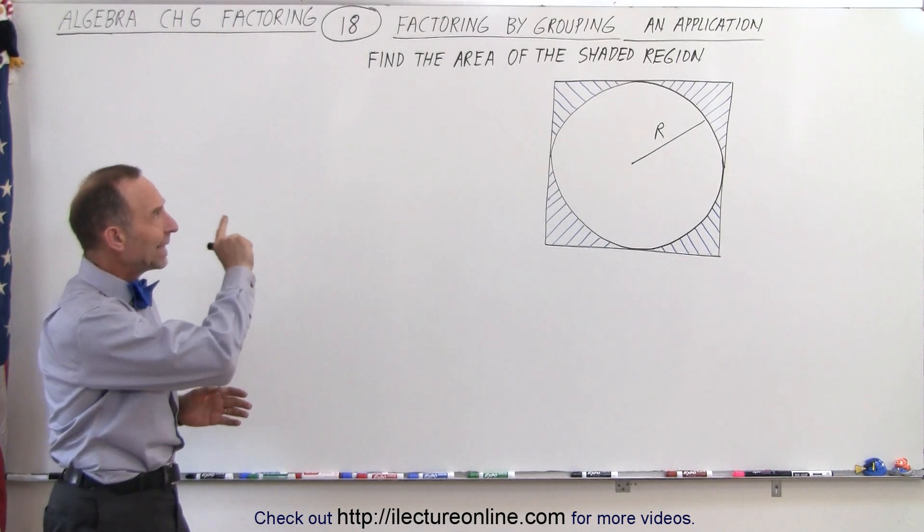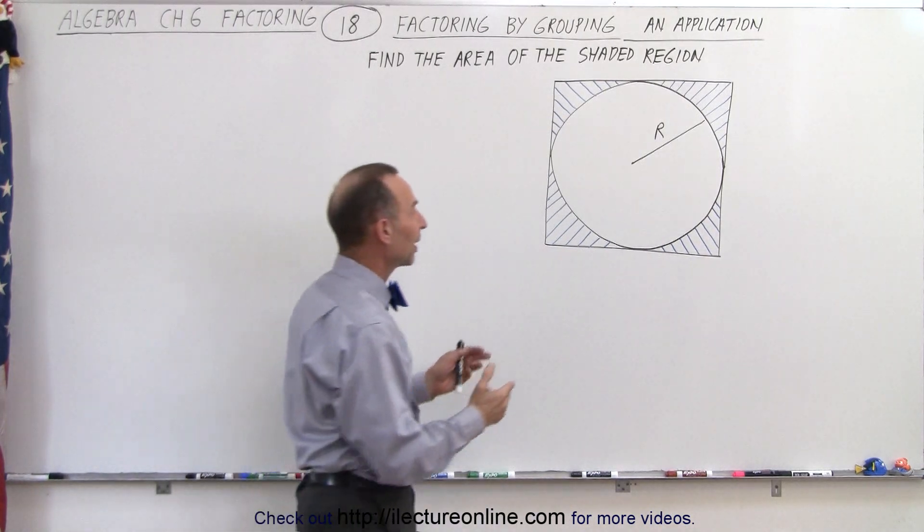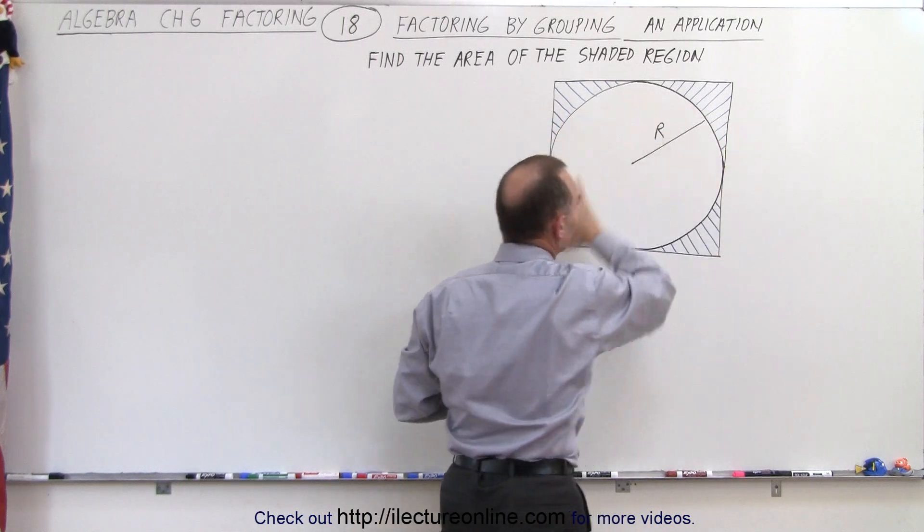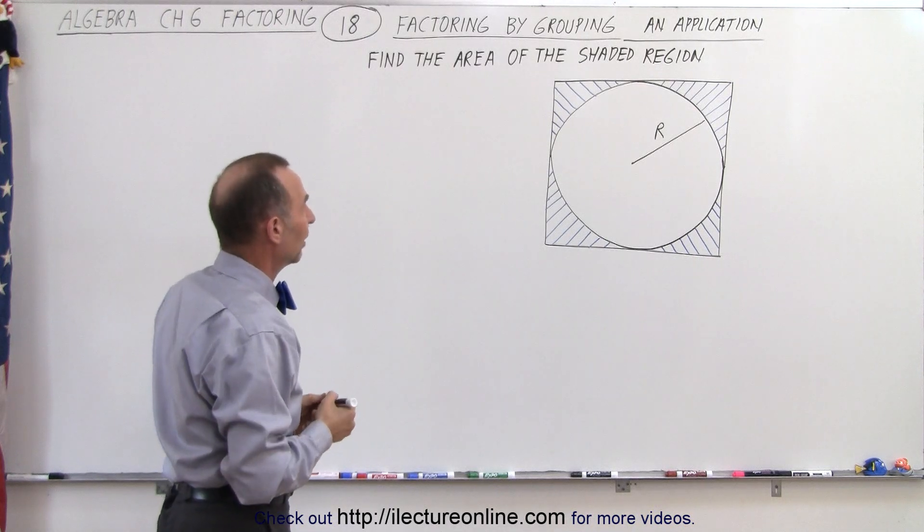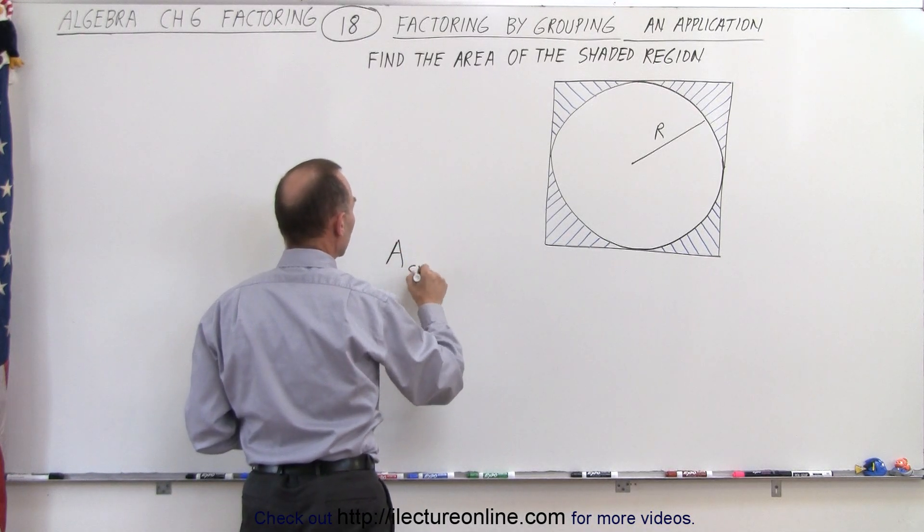What we're trying to do here is find the area of the shaded region, which means we're going to find the area of the square and subtract from that the area of the circle. That should give us the difference, the area of the shaded region.